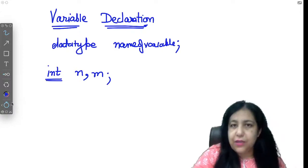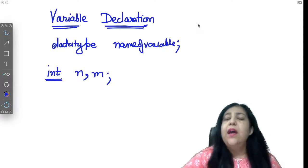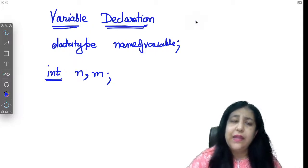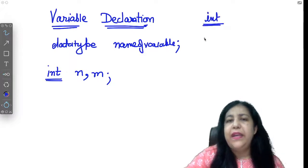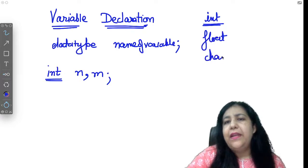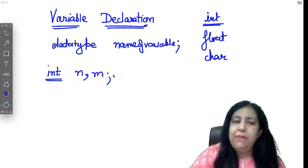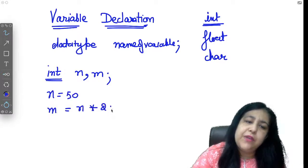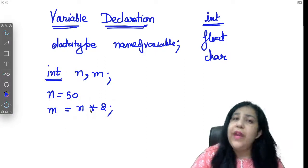That says that n and m are two variables and they can store what type of value? Integer. To store an integer I have many keywords, and there's a whole story behind it about how much memory an integer gets and how it's stored, which I will explain to you in separate videos. One video will explain integer completely, one will explain float, and one will explain character. But for now, if you want to take an integer, the most commonly used keyword is int in small letters. For float, write float in small letters. For character, write char in small letters.